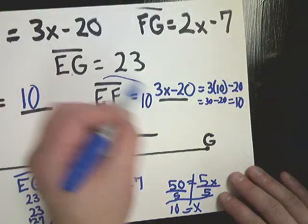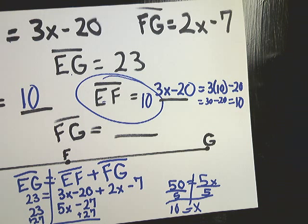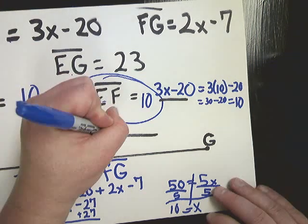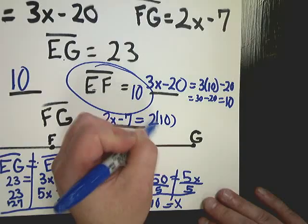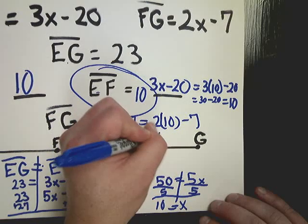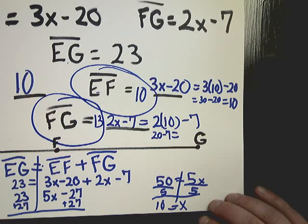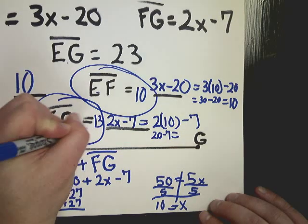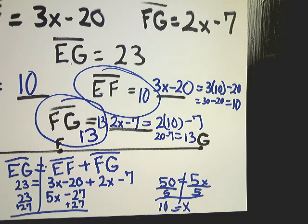I said that EF wouldn't necessarily be 10 and then it turned out to be that way. I don't know if that's ironic. I really don't think that it is. It's just a coincidence. But anyway, I was trying to make an important point and then I ended up making it invalid by using that as an example. Anyway, FG is the same type of thing. FG is 2X minus 7. I just need to plug in that 10 from down below. 2 times 10 is 20 minus 7. So my final answer for FG is 13.